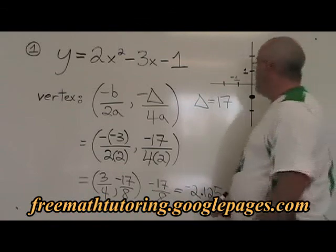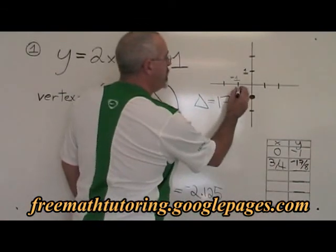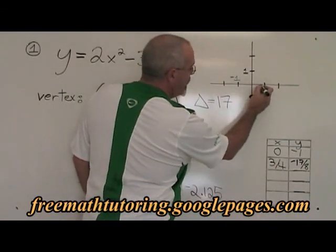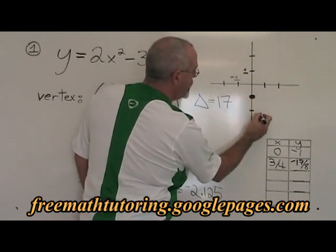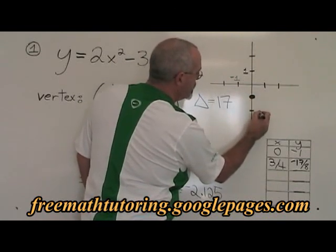Let's graph this. 3 quarters is here. Negative 2.125 is down here. This is our vertex.